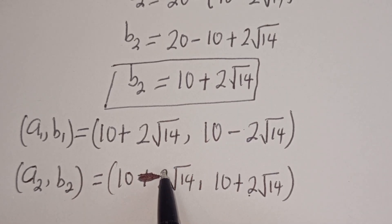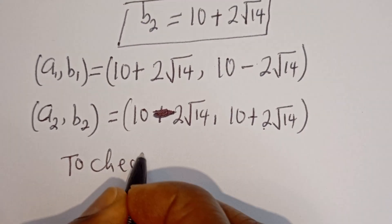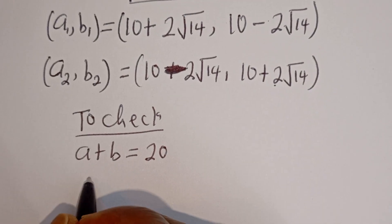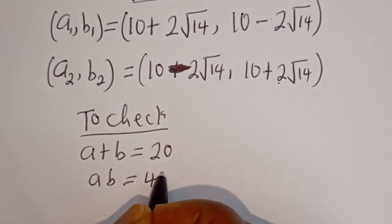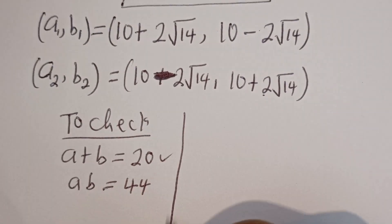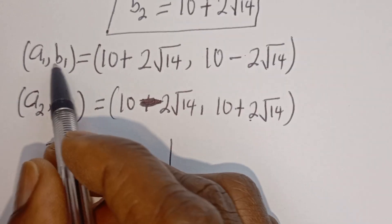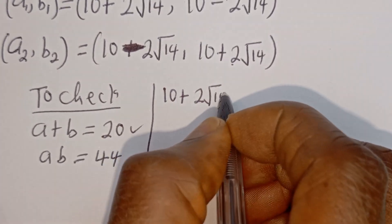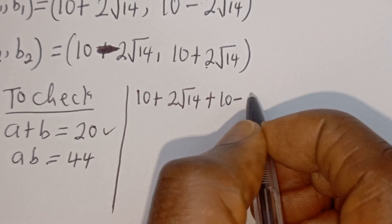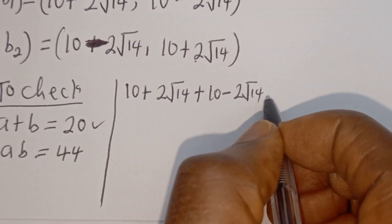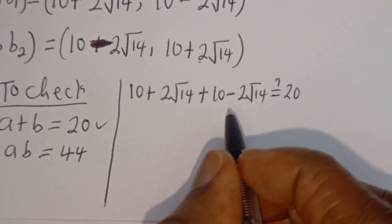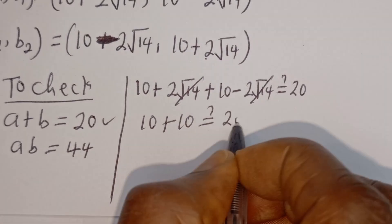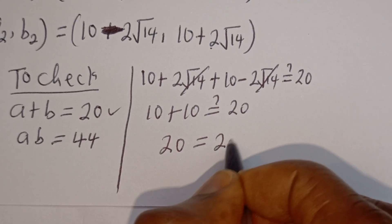So we can check to confirm if this answer is right or wrong. We have the given equations: a plus b equal to 20, and ab equal to 44. Let's use a1 and b1: (10 plus 2 root 14) plus (10 minus 2 root 14). The root 14 terms cancel, and we have 10 plus 10, which is 20, equal to 20. Which is true.